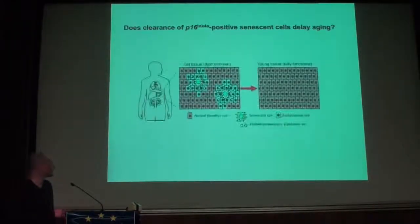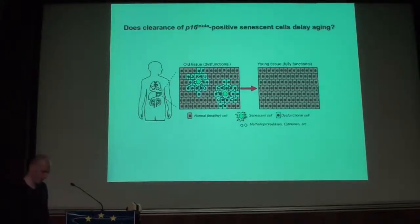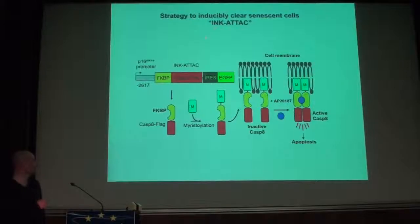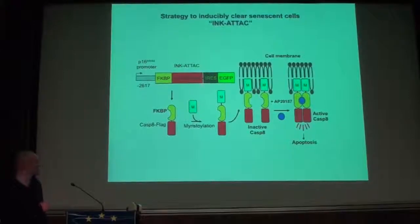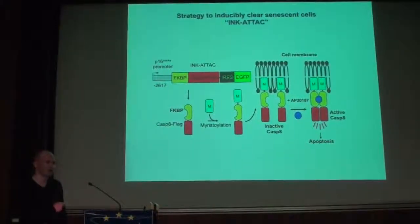We were then wondering: what if we can clear these P16-positive senescent cells? Will this delay these aging phenotypes? To do so, we made use of a transgene called INK-ATTAC to induce apoptosis and kill these senescent cells.